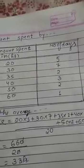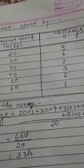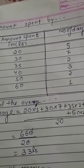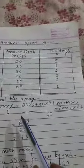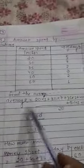Question number 5 is, amount spent by group of 3 friends in the school canteen for 20 days of the month is given below. This table is given to you. The amount is given to you. What is the question? Find the average amount spent per day.